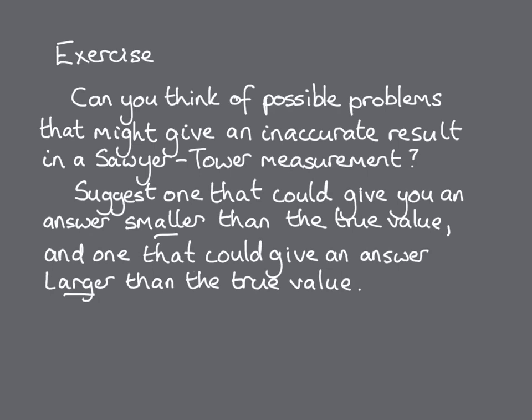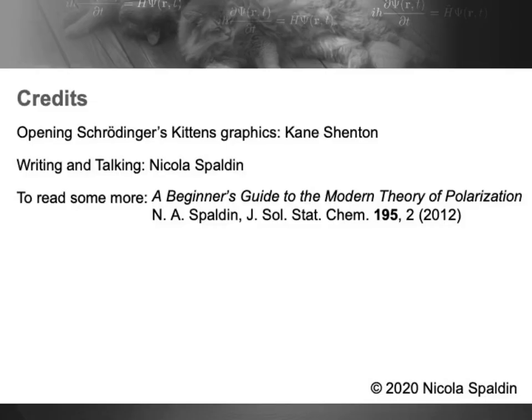Before we leave this topic, have a think about possible sources of experimental error in a Sawyer Tower measurement. You should find one that would give an underestimate of the true polarisation, as well as one which will overestimate the polarisation value. When you're happy with your answers, come back and join us for Module 6 in the series.